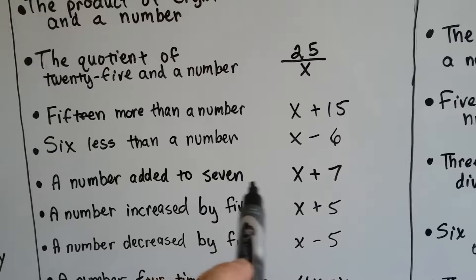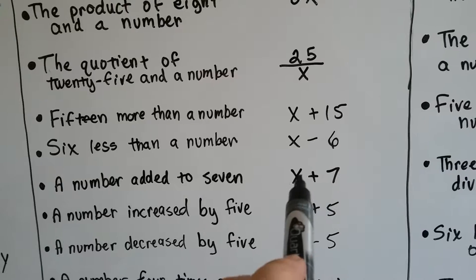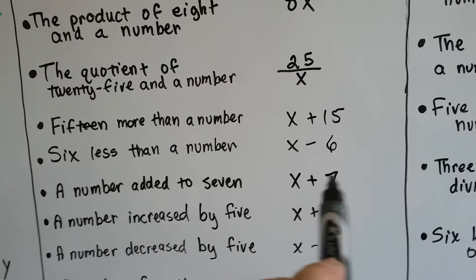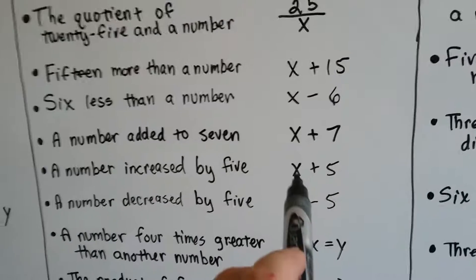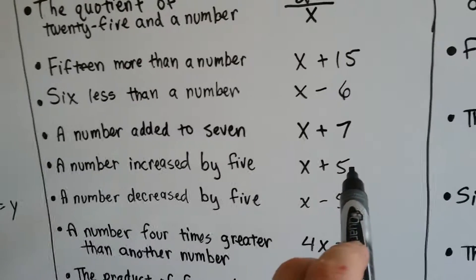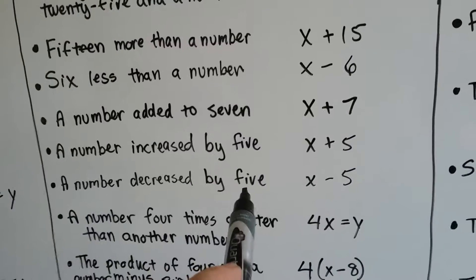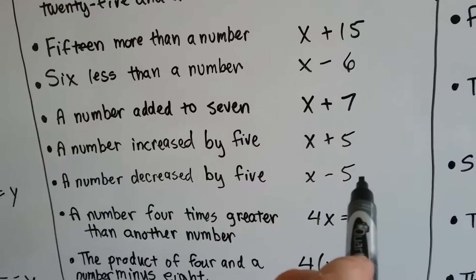A number added to 7 would be a number x plus 7. A number increased by 5 would also be x plus, and then we would just add the 5. A number decreased by 5 would be x minus the 5.